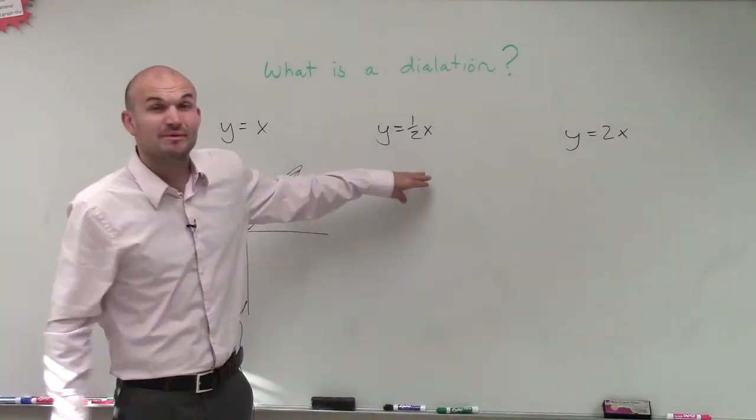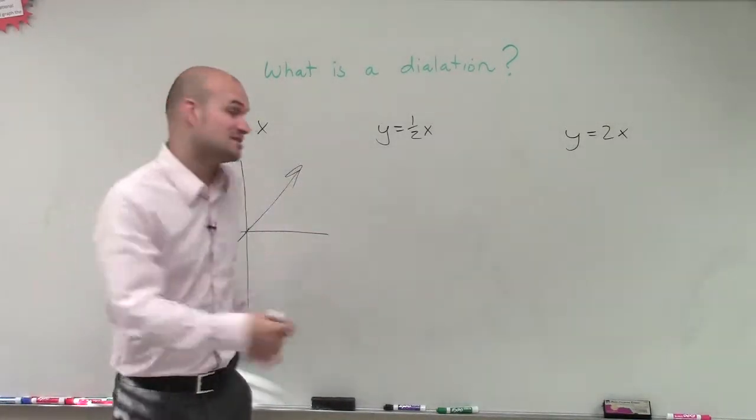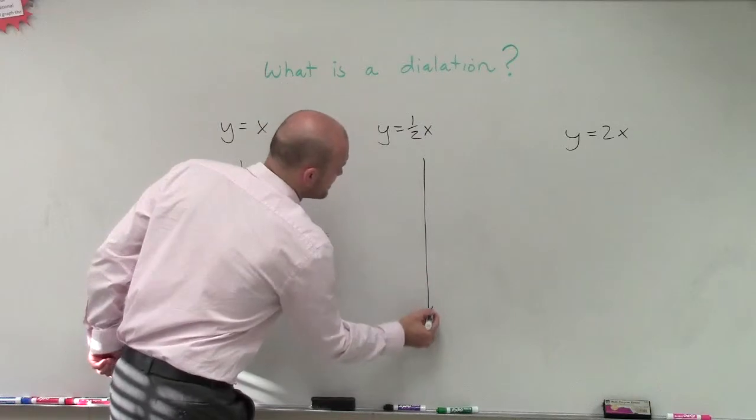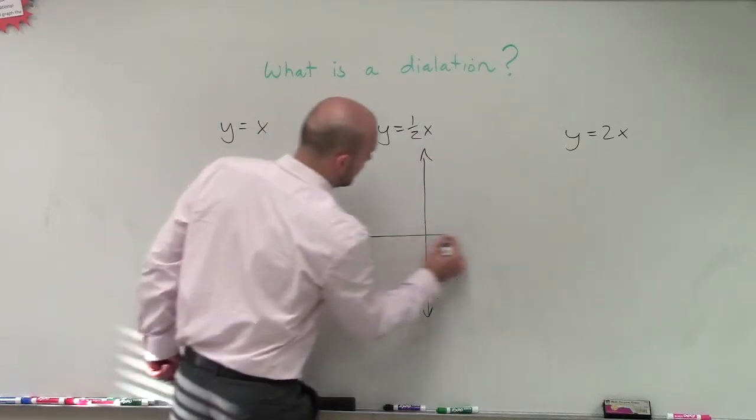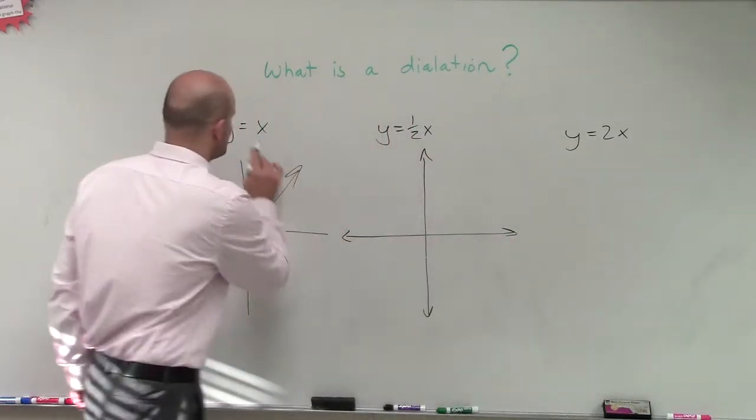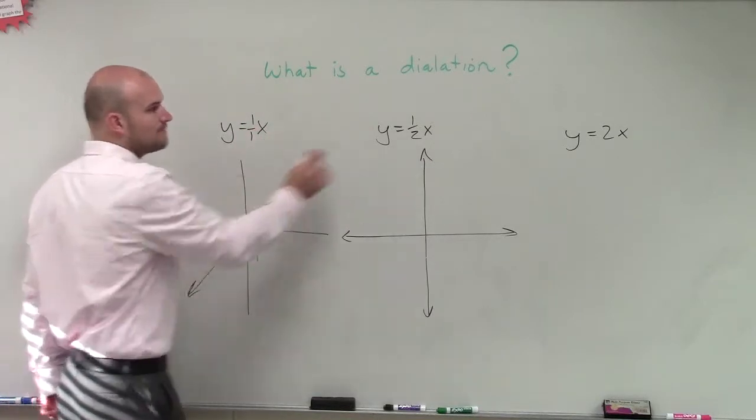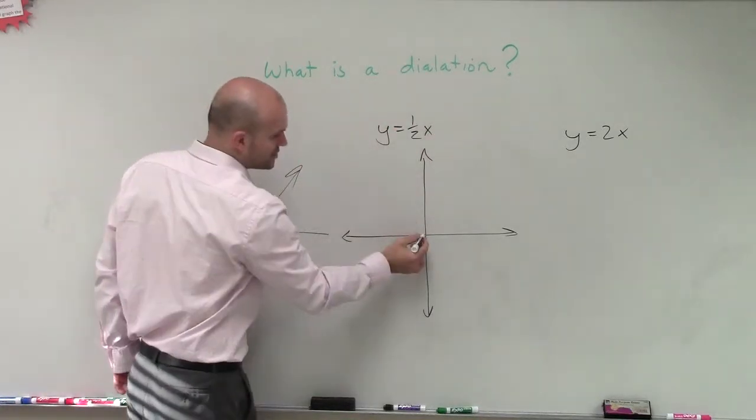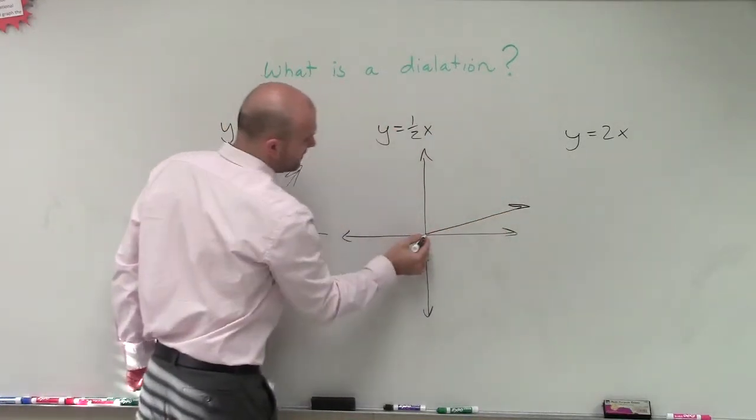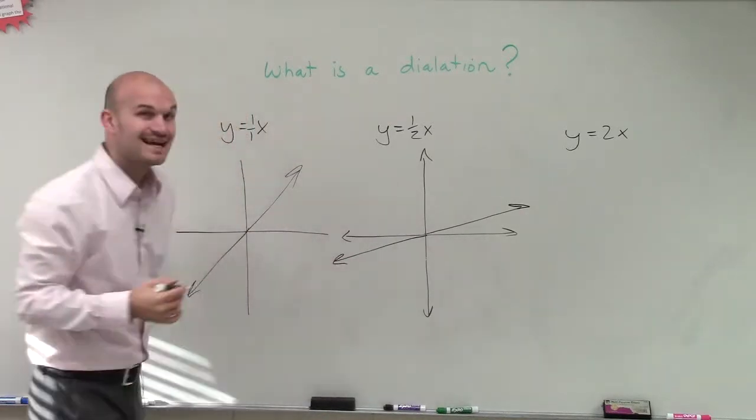But now, when we multiply by 1 half, that actually affects and changes the graph. And what we say is the slope of my graph, this one would be up 1 over 1. Now this is up 1 over 2. So we can say that the graph is less steep.